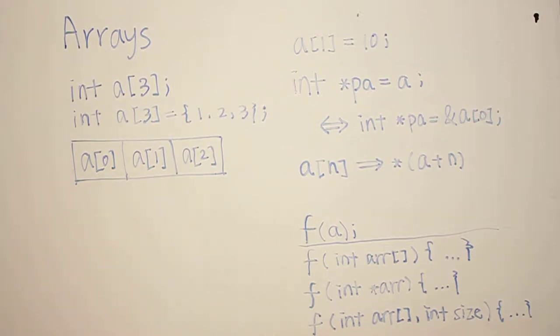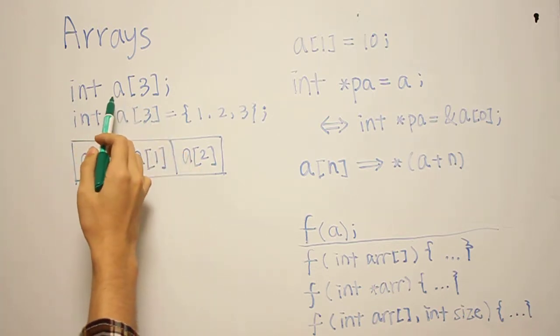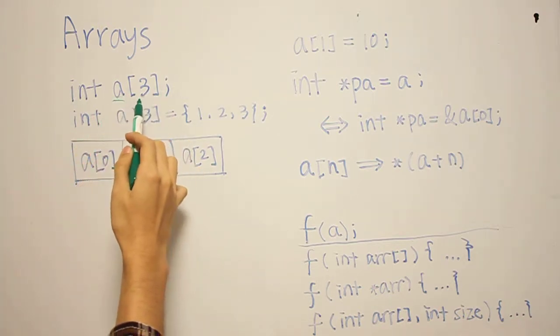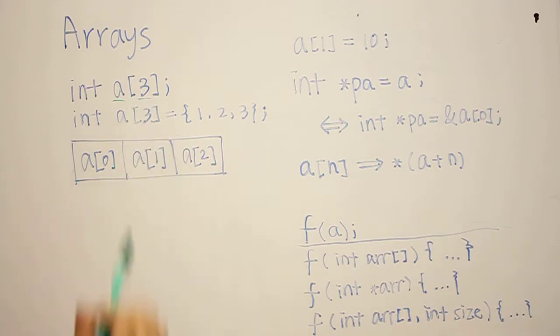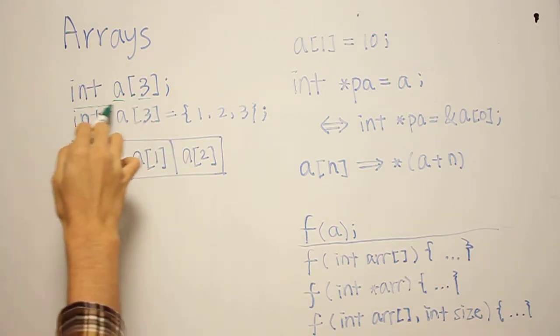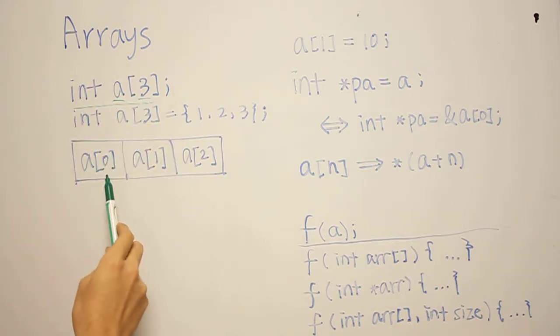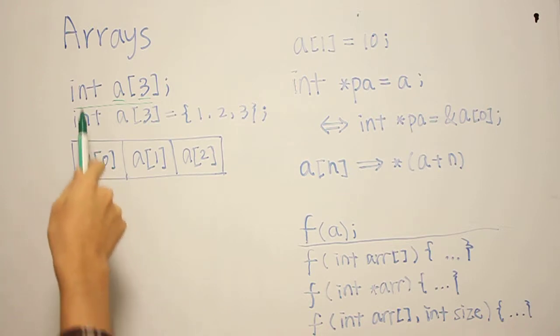Arrays in C. This is how you create an array in C. You put a name of the array here, and then the number of elements you want in this array. So if you do this, then it will give you three slots of memory that can contain integer, like this.